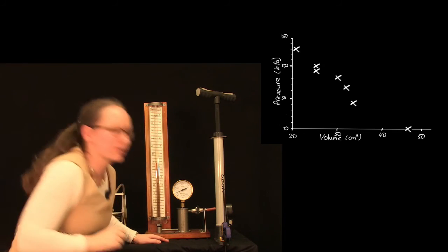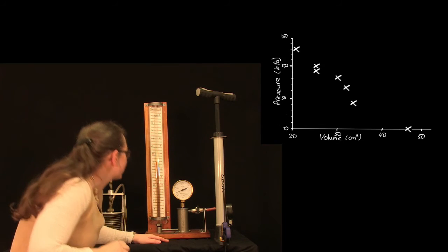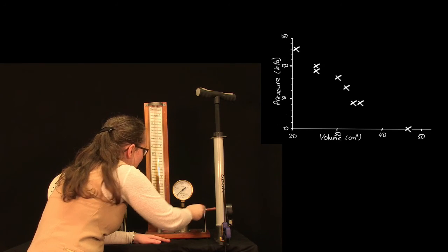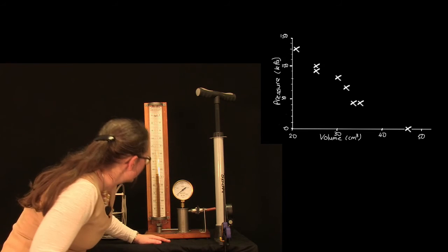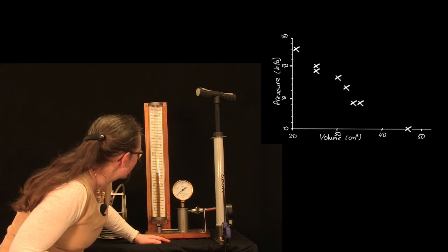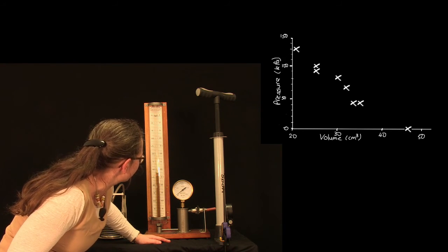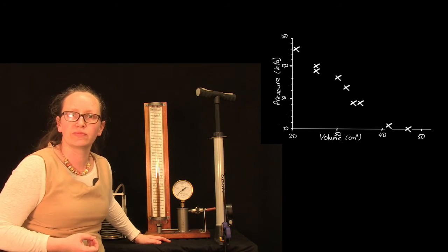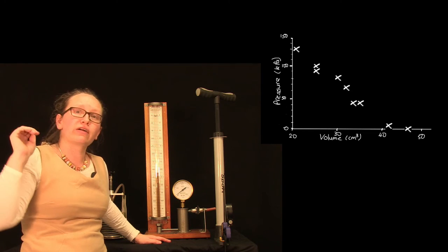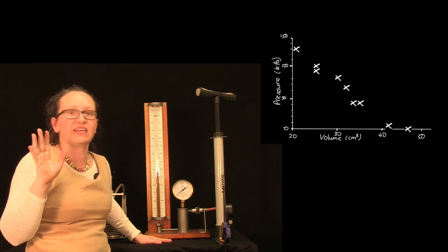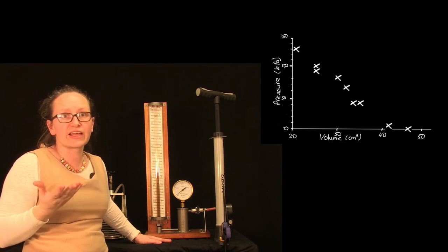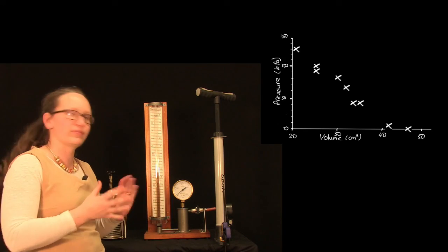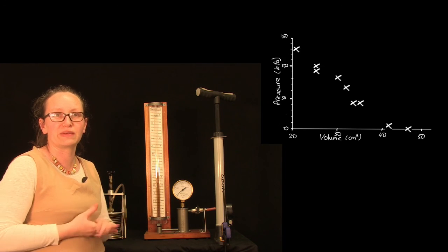We're down to 40 kilopascals, and the volume of air is 35 centimeters cubed. And we've gone to 10 kilopascals, and the volume of air is now around about 42 centimeters cubed. So when we plot these on the graph, you can see that it is roughly hyperbolic. It's not exactly right because of the large uncertainties involved in this experiment. If you want, you can go and predict what those uncertainties should be.